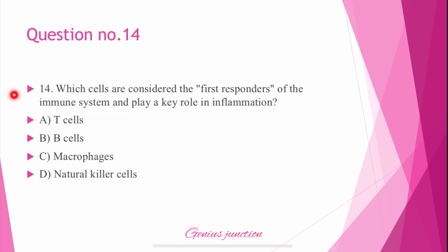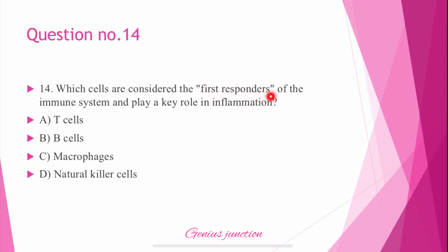Question number 14: Which cells are considered the first responders of the immune system and play a key role in inflammation? Options are: T cells, B cells, macrophages, and natural killer cells. The right answer is C — macrophages. Macrophages are the first responders of the immune system and play a key role in inflammation.